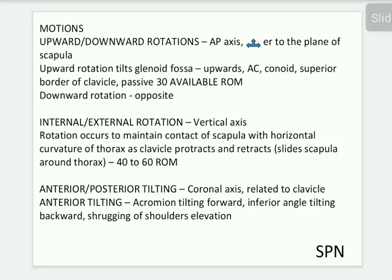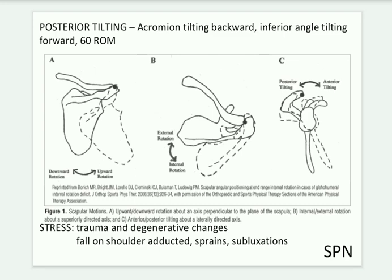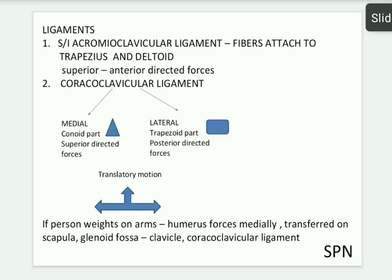Stress at the acromioclavicular joint may lead to degenerative changes. When you fall on the shoulder, the shoulder is forced into adduction, leading to sprain — that is, ligament tearing — and subluxation. Subluxation means the bone remains in partial alignment with a small fracture but stays within the same alignment. This represents the clinical importance of the acromioclavicular joint biomechanics.